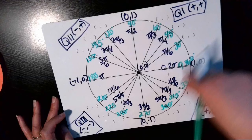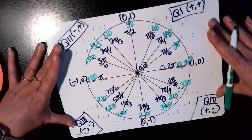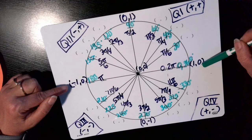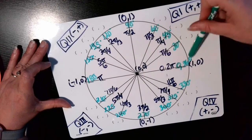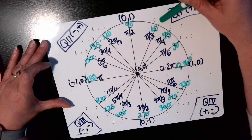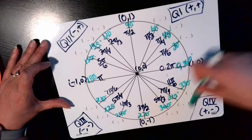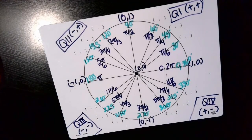We now have the radians layer, the positive/negative quadrant labels, and the ordered pairs for the quadrantal angles. We still need to fill in the ordered pairs for the special angles that are not quadrantal, and we'll do that in the next video.